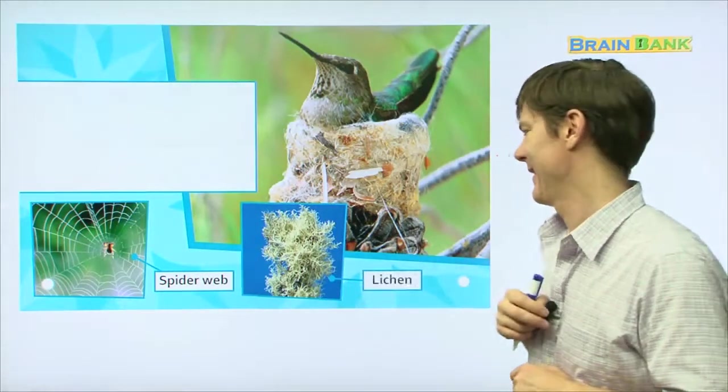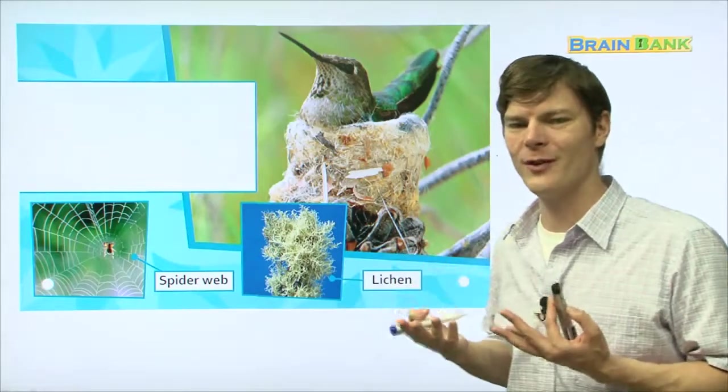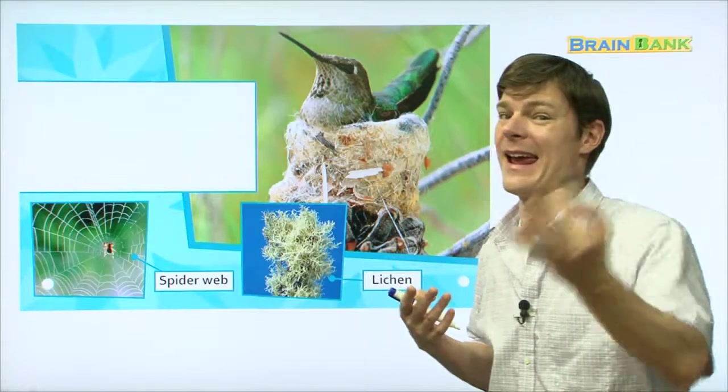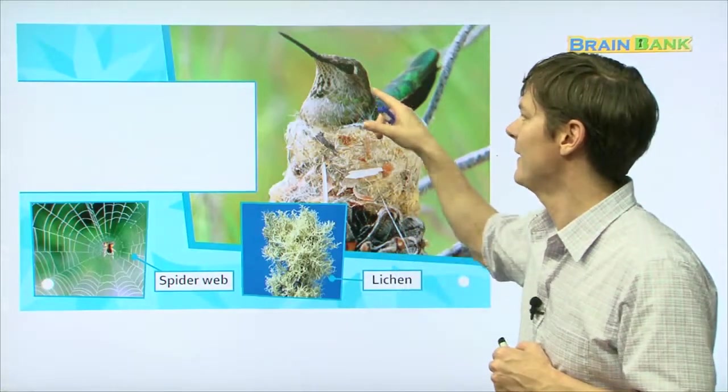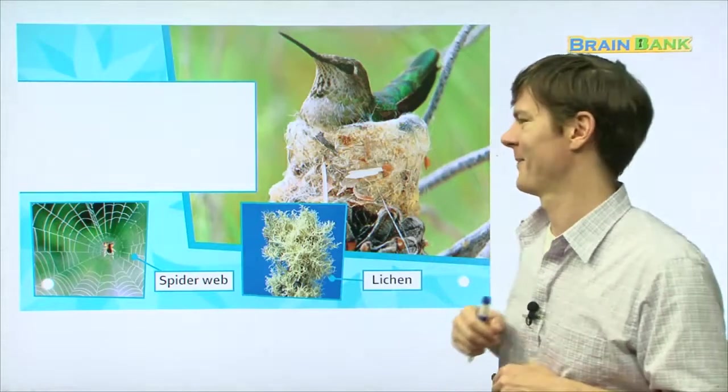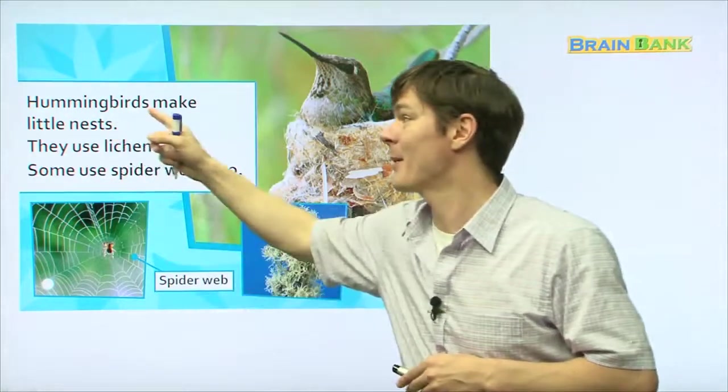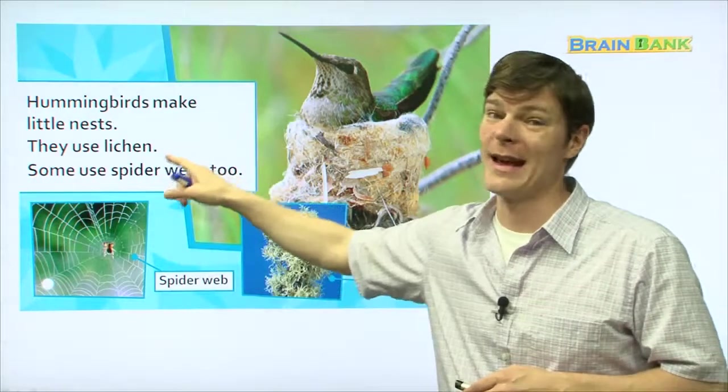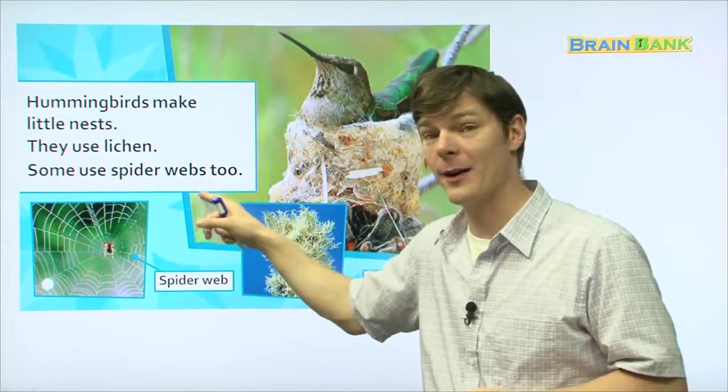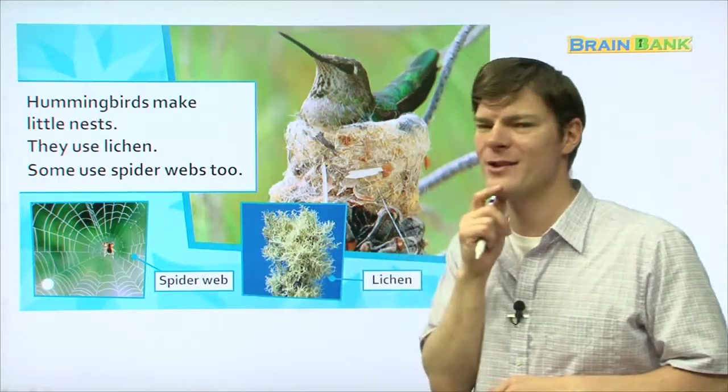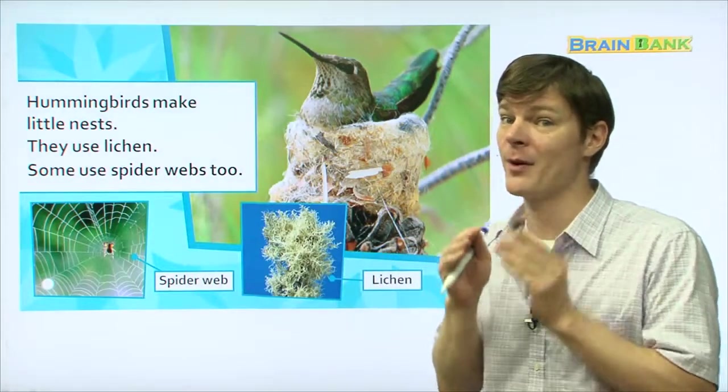It's called lichen. And this right here is what? This is a nest. What do birds do in nests? They lay eggs. So inside here are little hummingbird eggs. And this is probably the mommy hummingbird. Hummingbirds make little nests. Everyone read with me. Hummingbirds make little nests. They use lichen. They use lichen. Some use spider webs too. Some use spider webs too. Both of these, I'm imagining, are very strong. Which is what the nests need to keep the little baby hummingbird eggs safe.